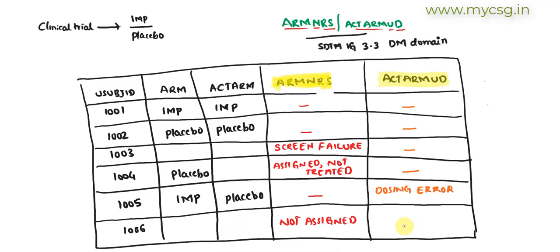So these two variables, ARMNRS and ACTARMUD, are new in SDTM IG 3.3 DM domain. This is how you can populate them and easily remember their purpose. Thank you for watching and keep learning.